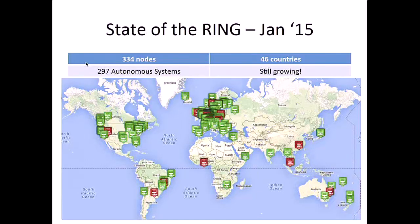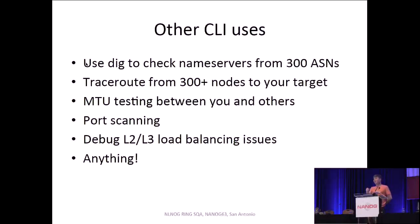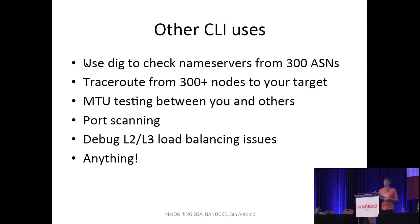The current state of the Ring is that there are almost 300 organizations participating with nodes spread over 50 countries, so there's a gigantic amount of diversity to assess your network situation from the outside. You provide a machine, and in exchange you get access to all other machines in the Ring project. Example uses include debugging authoritative name servers, traceroutes from a huge number of nodes, MTU testing for both V4 and V6, port scanning, and debugging load balancing issues — which is where the Ring originally started.